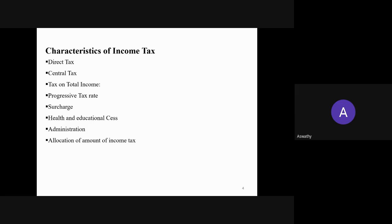The surcharge rate is different for individuals and other assessees like firms and companies. For individual assessees, if their income is between 50 lakhs to 1 crore, they have to pay 10% surcharge. The highest rate of surcharge charged to an individual assessee is 37% for those whose income exceeds 5 crores — this is based on the old tax regime. According to the new tax regime, the highest rate of surcharge is 25% in case of individual assessees.